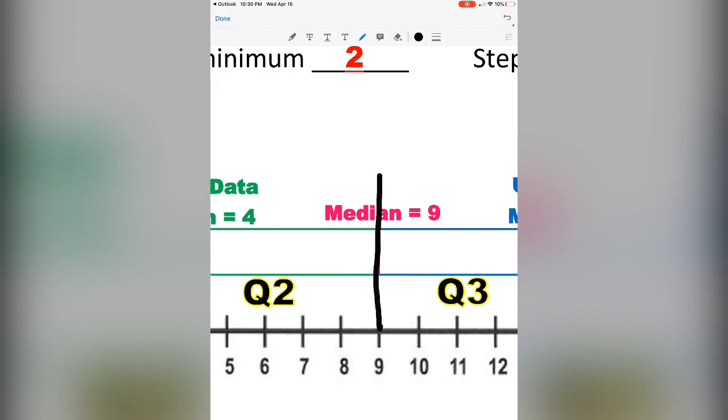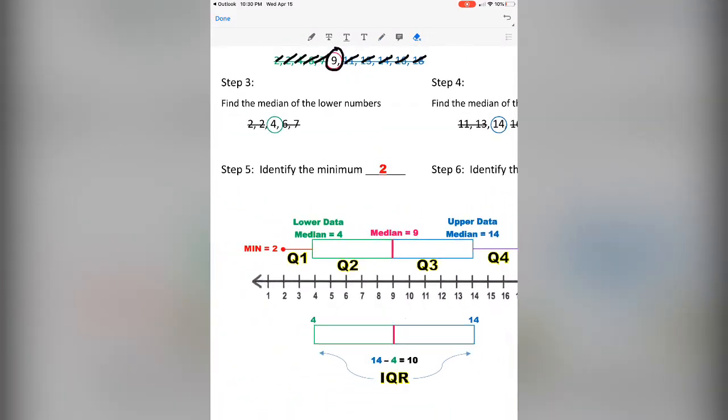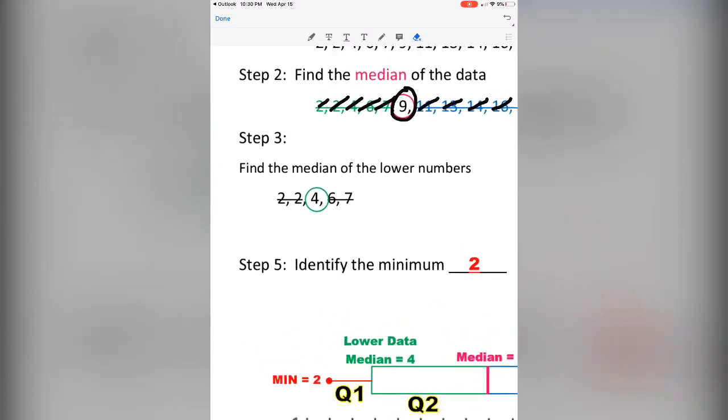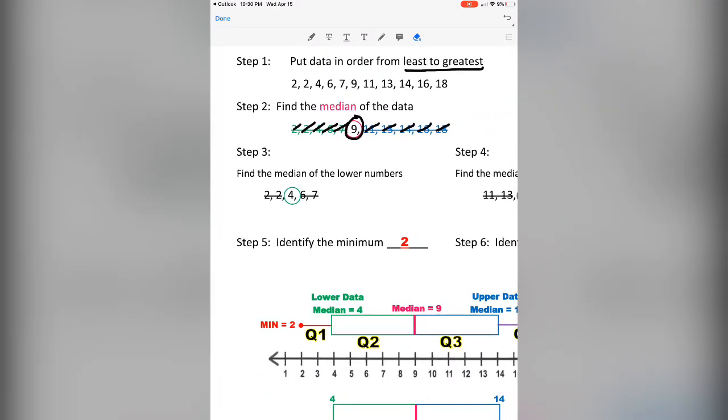The median splits the data into a lower quartile and an upper quartile, or lower numbers and higher numbers. We're going to look at the lower numbers first. We're going to find the median of the lower numbers.